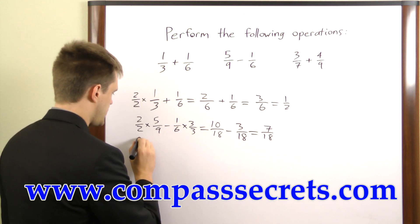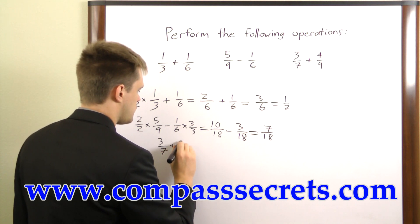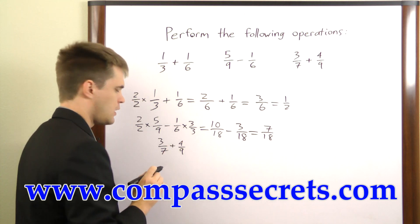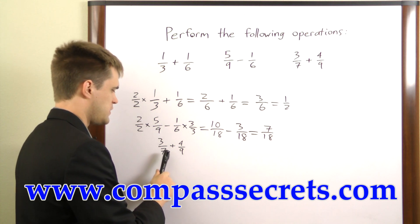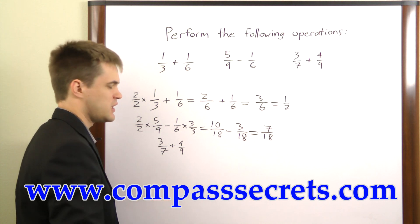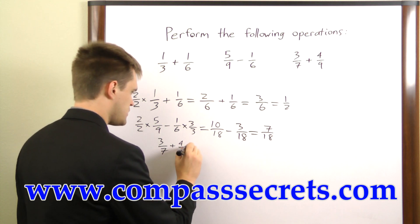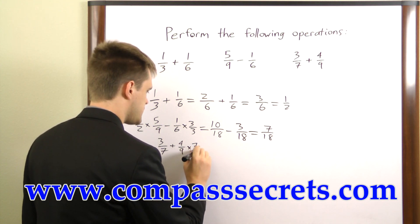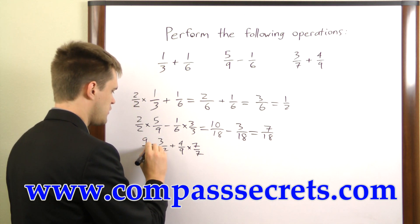In this final example, we have 3 over 7 plus 4 over 9. Now in some cases, your least common multiple is just going to be one number times the other, and that's what we have here. So the second fraction we're going to multiply by 7 over 7. The first fraction we're going to multiply by 9 over 9.